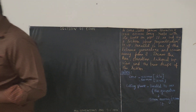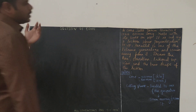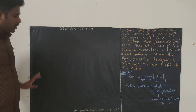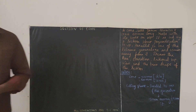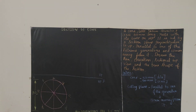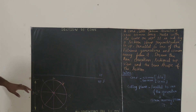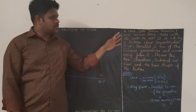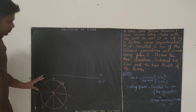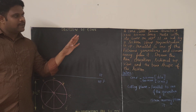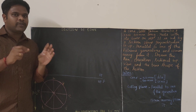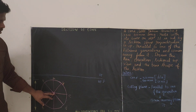Initially, we need to draw the reference line and we will be drawing the base diagram. Since the cone is resting on HP, we will be drawing the base circle on HP. First step: you have to draw the reference line and name it as XY (VP/HP). Next step, the cone is resting on HP, so you are going to draw the base diagram — that is, the circle on HP. Diameter is given as 50 mm, so take 25 mm in your compass, and draw the circle.